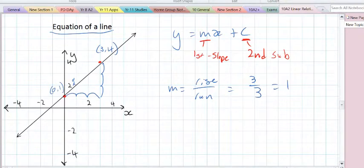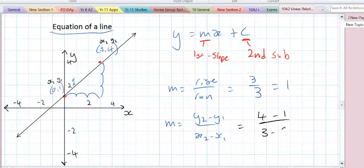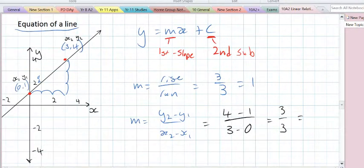If you'd rather use the equation where m equals y2 minus y1 over x2 minus x1, you need to label the points x1, y1, x2, y2. y2 is 4 minus y1 of 1, divided by x2 of 3 minus x1 of 0. 4 minus 1 is 3 over 3 minus 0 is 3, giving us a total of 1.